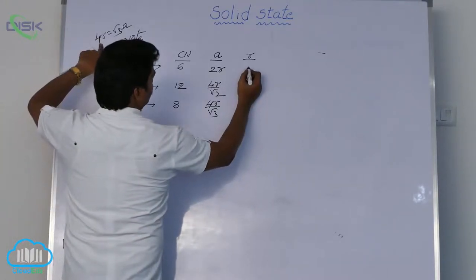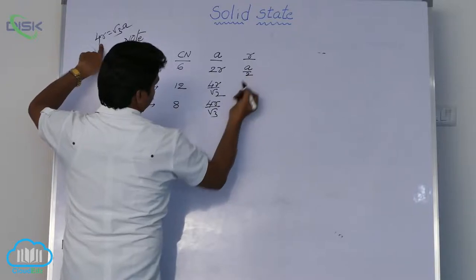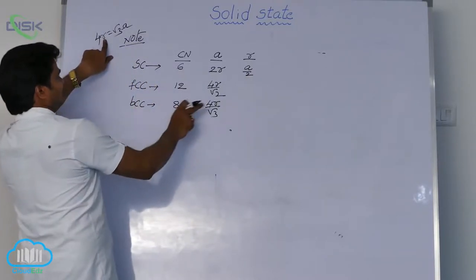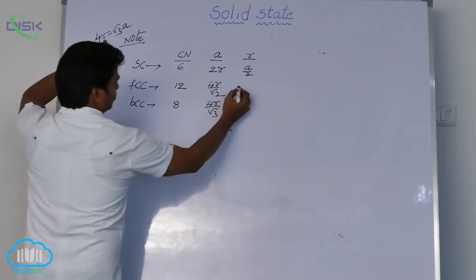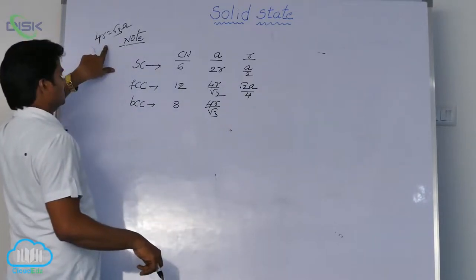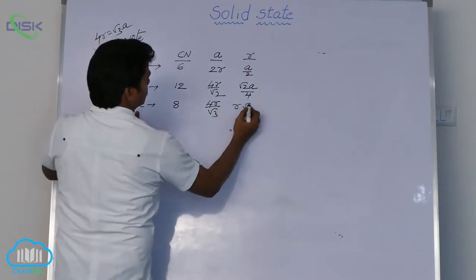Here, r is equal to a by 2. In FCC, r is equal to √2a by 4. In BCC, r is equal to √3a by 4.